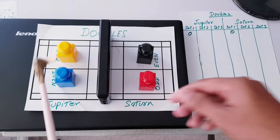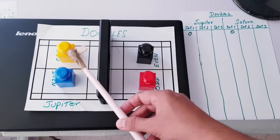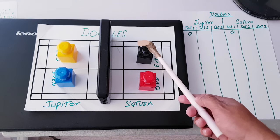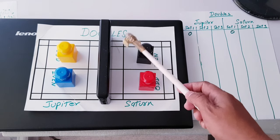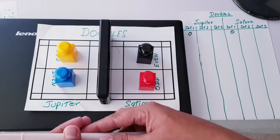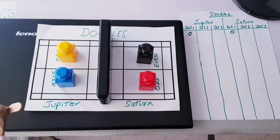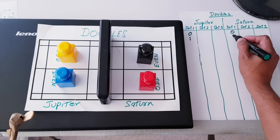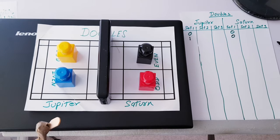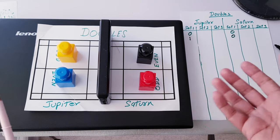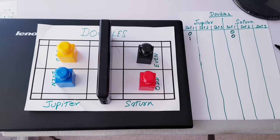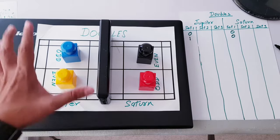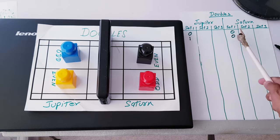Blue serves, black is unable to return it properly. Jupiter wins the point — score becomes one-zero (Jupiter serving, so we read their score first). Under the new rules, whenever you win a point, both players on the serving team switch sides. They switched, current score is one-zero. Since one is odd and blue is now on the odd side, blue serves again.